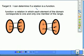Target 3. I can determine if a relation is a function. A function is a relation in which each element of the domain corresponds to one and only one member of the range.